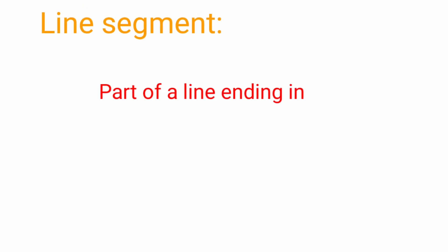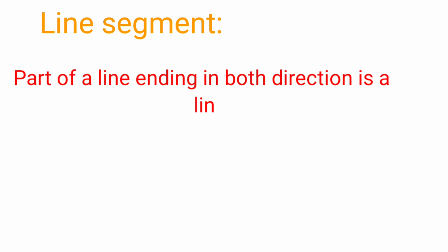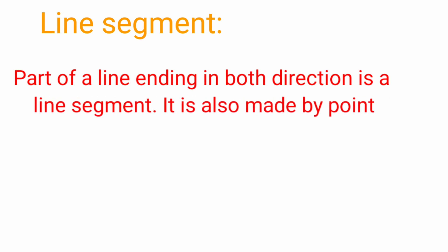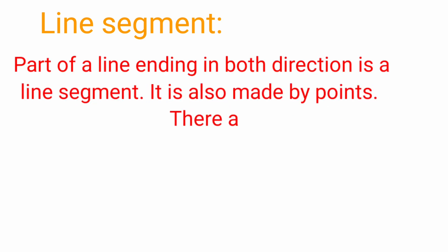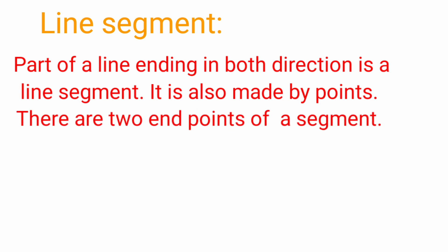Part of a line ending in both directions is a line segment. It is also made by points. There are two end points of a line segment. Line segment woh line ka ek part hota hai jo dono directions mein end hota hai.